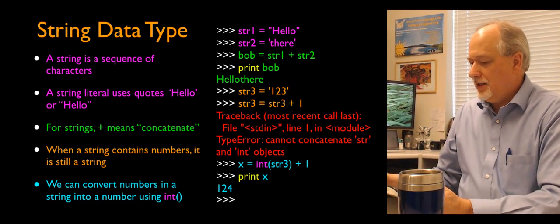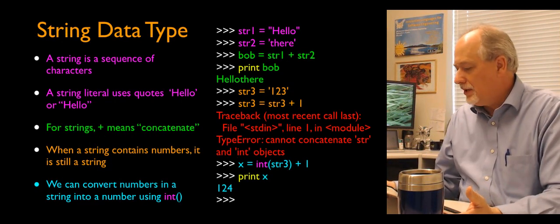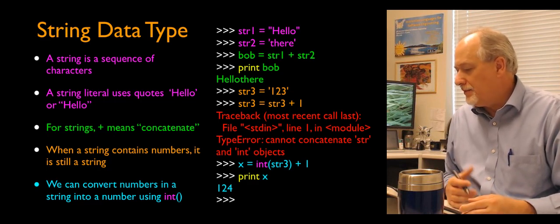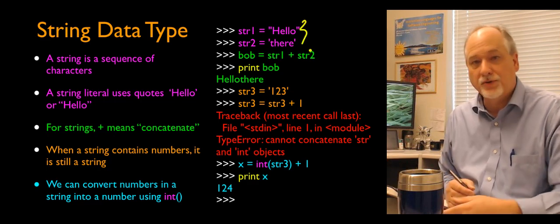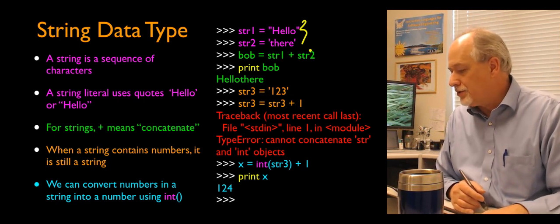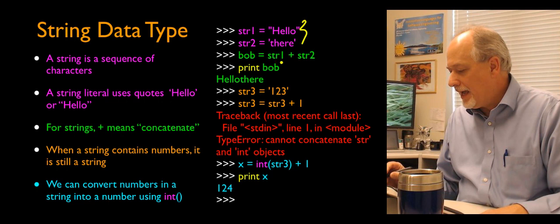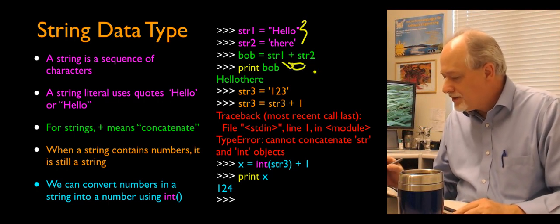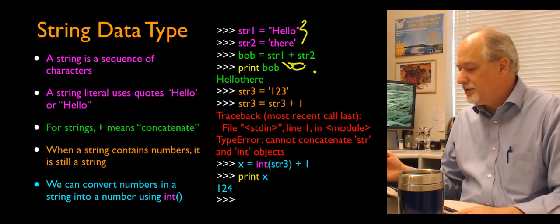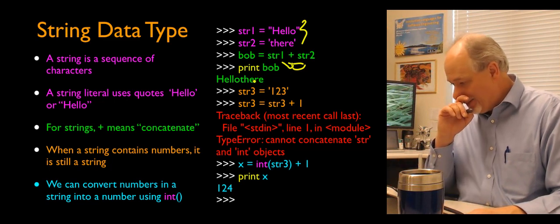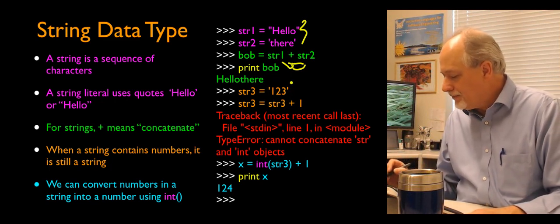So a string is a sequence of characters. You can either use single quotes or double quotes in Python to delimit a string. Here are two string constants, hello in there, stuck into the variables str1 and str2. Now we can concatenate them together with a plus sign. Python is smart enough to look and say, oh, those are strings, I know what to do with those.